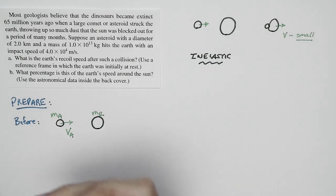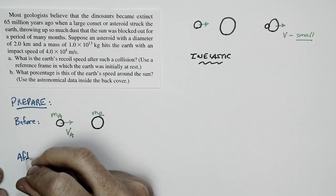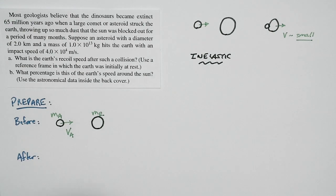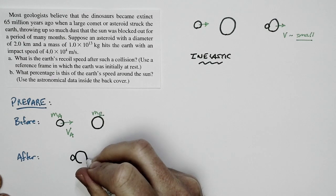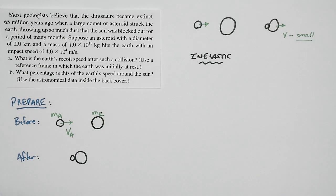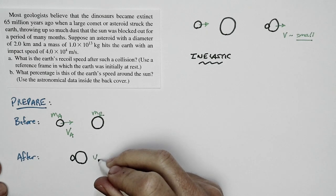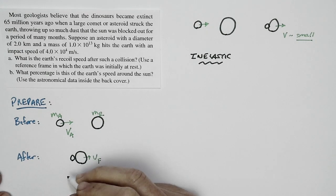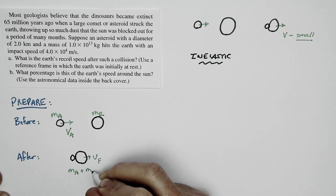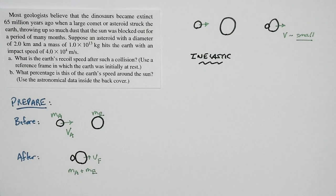The after picture looks like this. In the after situation, the Earth and the asteroid move off together at a common speed, which I'm just going to call VF, the final speed at which they move off. But the mass is now the combined mass of the asteroid plus the Earth. So it's MA plus ME.